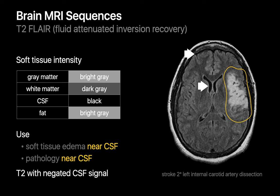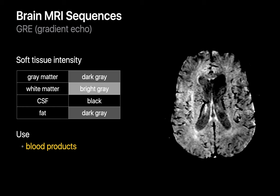Our fourth standard brain MR sequence is gradient echo imaging. The grayscale relationships of gray matter, white matter, and CSF on gradient echo images are similar to their relationships on T1-weighted imaging. However, when iron is present on a gradient echo image, a black region will appear that extends or blooms into the surrounding tissues. Gradient echo imaging is therefore helpful for recognizing blood products, due to the iron content of hemoglobin. You can see this black bloom in the left frontal horn of this patient with intraventricular blood.